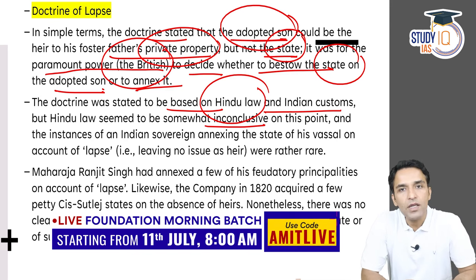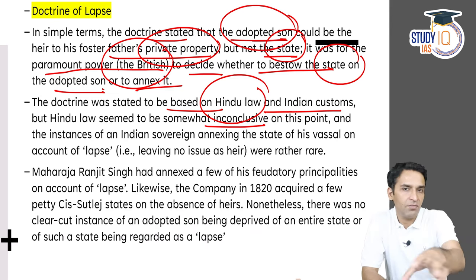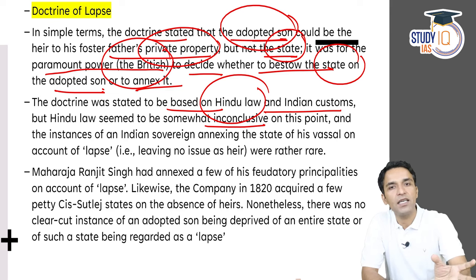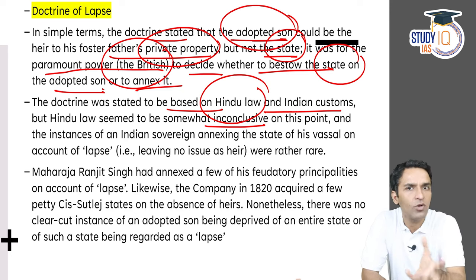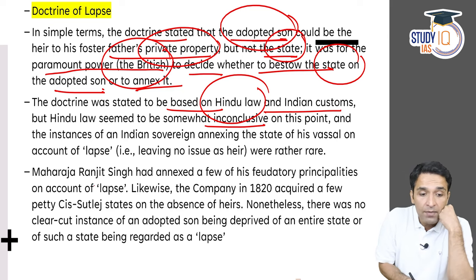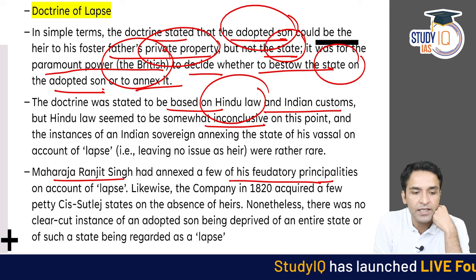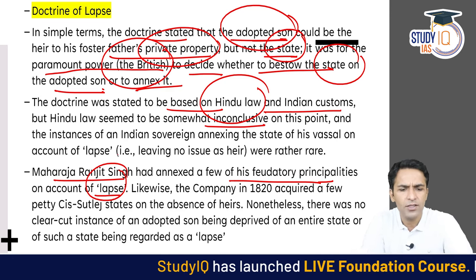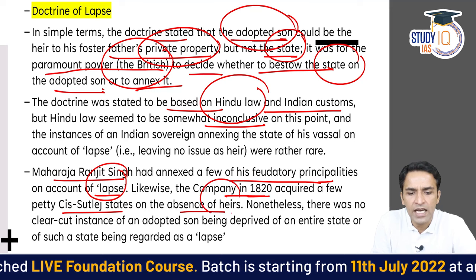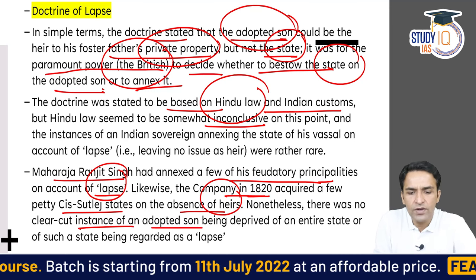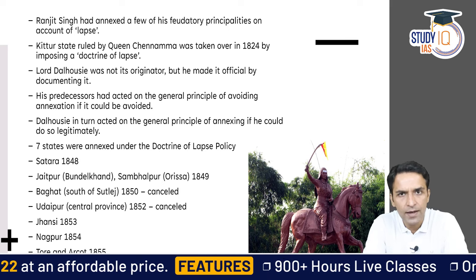At the time, Britishers were in control of practically all of India. In subsidiary alliance states, whenever a raja died without an heir, Britishers would say the Doctrine of Lapse would apply — there cannot be any other ruler, we must annex this state. The doctrine was stated to be based on Hindu law and Indian customs, but Hindu law was actually inconclusive and confusing. Such a clear-cut principle had little historical precedent before 1800. Lord Dalhousie was technically not the originator of the Doctrine of Lapse, but he made it official by documenting it.